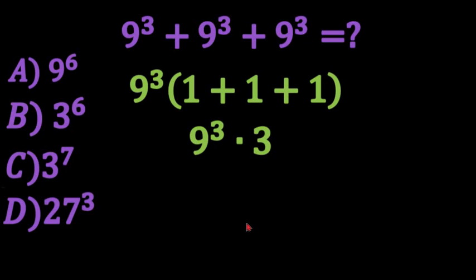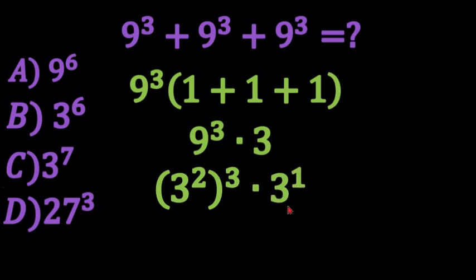And then what we're going to do is we're going to rewrite 9 so that it has a base of 3. And 9 is the same thing as 3 squared. So we would have 3 squared to the power of 3 times 3, which 3 is technically to the power of 1.